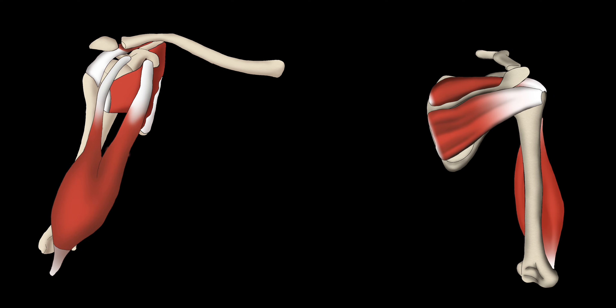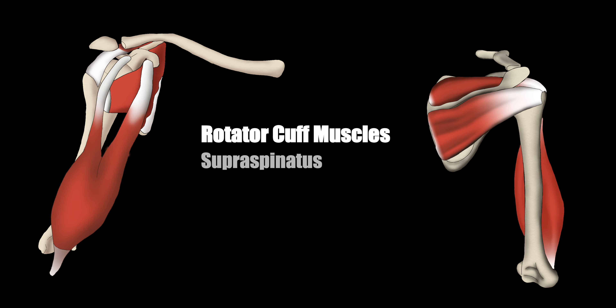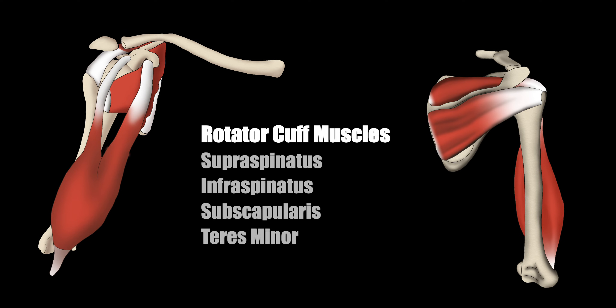The rotator cuff is a group of four muscles that are responsible for shoulder stability. Understanding the anatomy and function of these muscles is crucial to performing the ultrasound. The muscles of the rotator cuff are the supraspinatus, infraspinatus, subscapularis and teres minor.